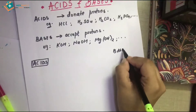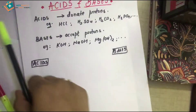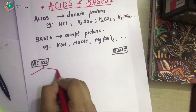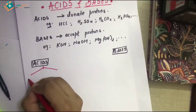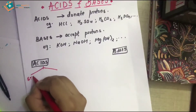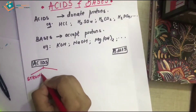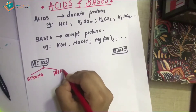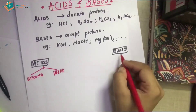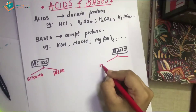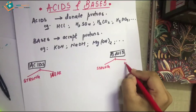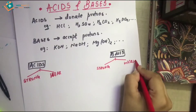In acids and bases, we have two types of acids and two types of bases. In acids, we can see strong acids and weak acids. Similarly, in bases, we have strong bases and weak bases.